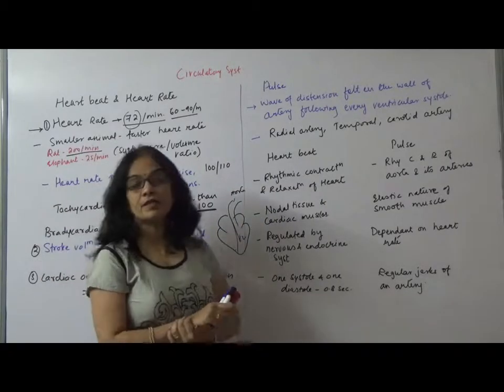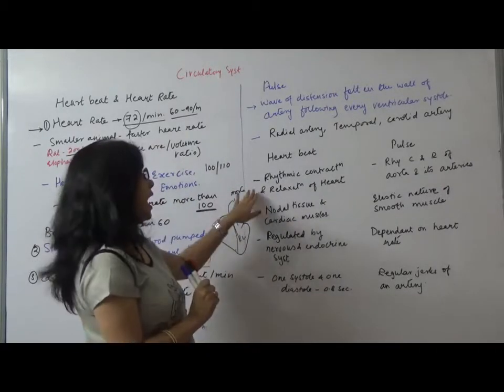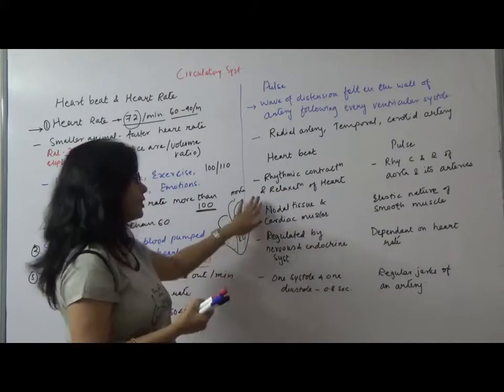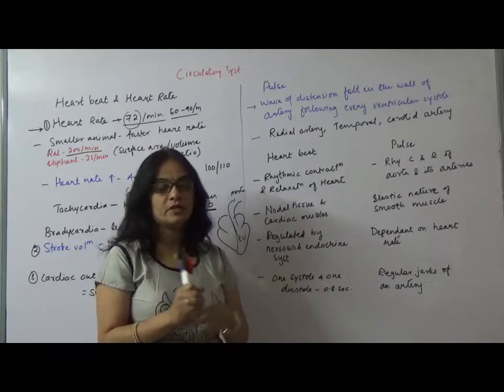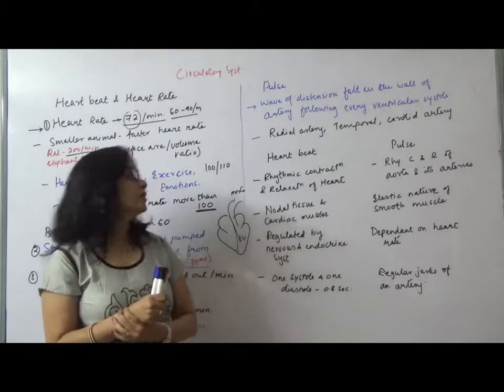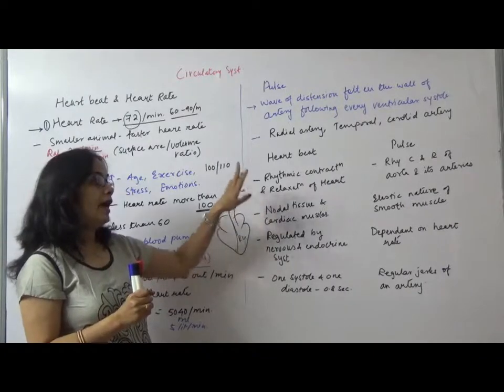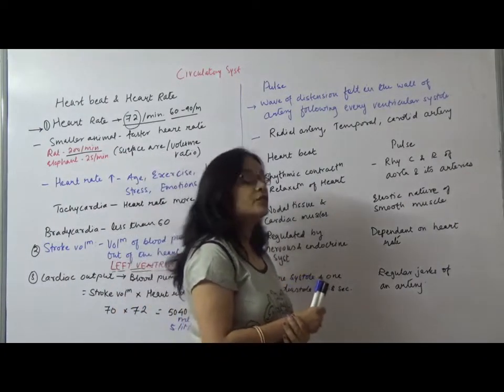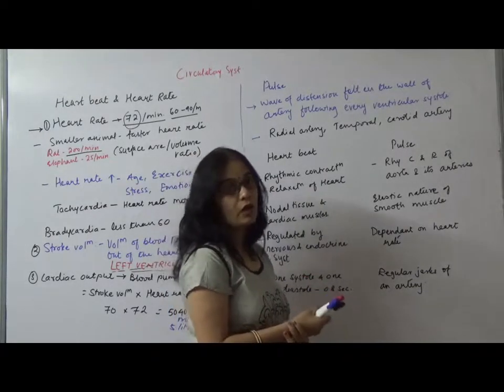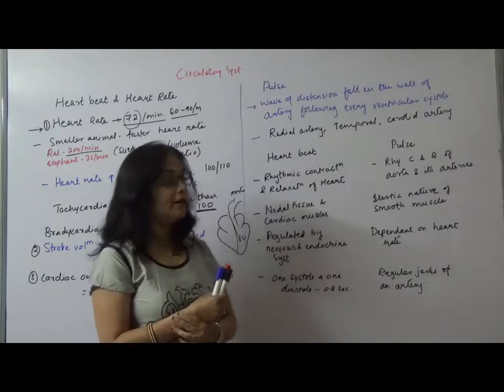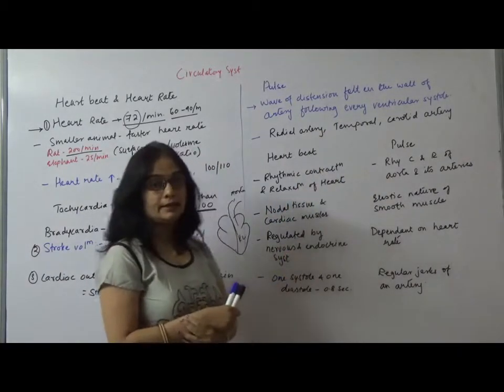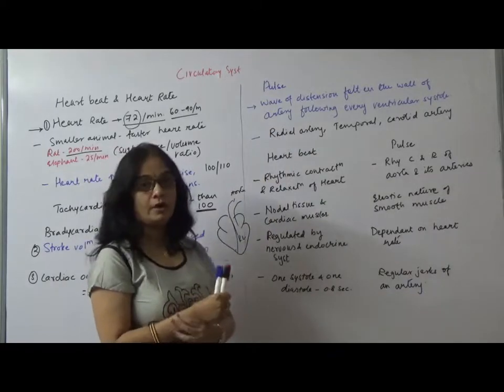Pulse is a wave of distension which is felt and which is directly related to the heart rate. If heart rate is 72, pulse generally is 72, that can be taken in arteries. Heart rate is rhythmic contraction and relaxation of the heart. Here we will differentiate what is heart rate and pulse.